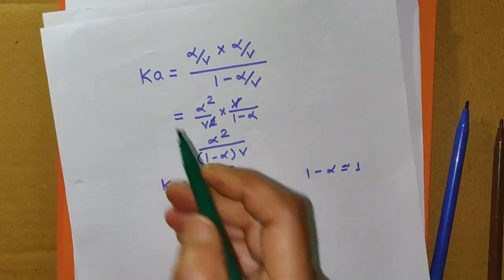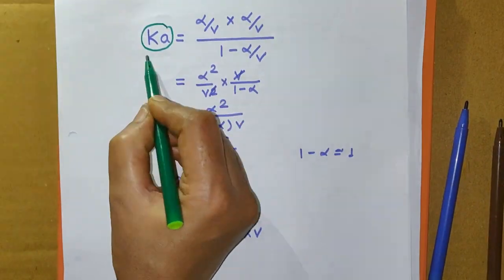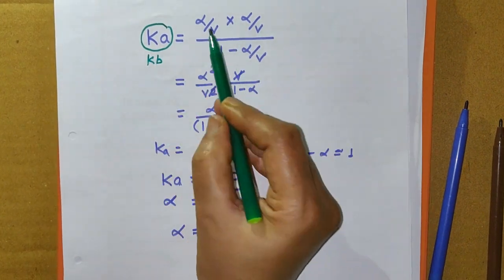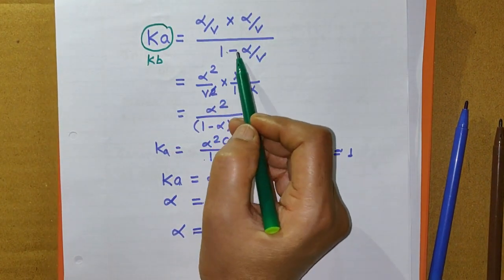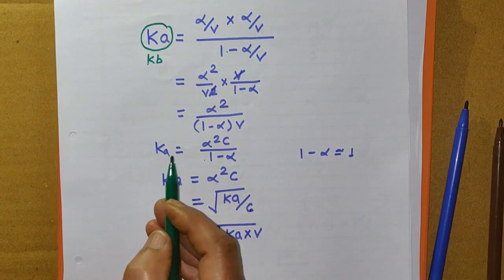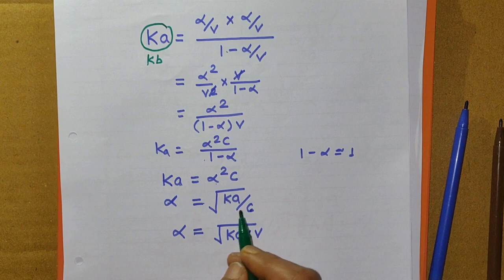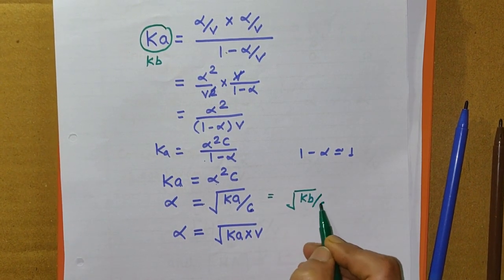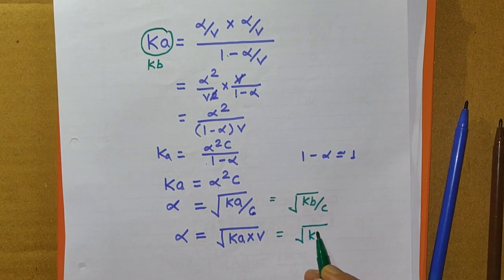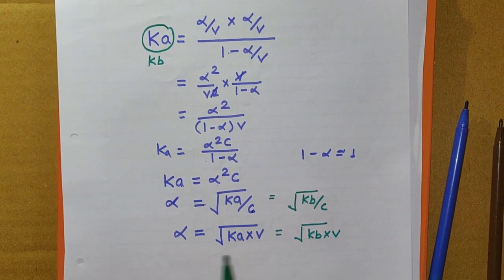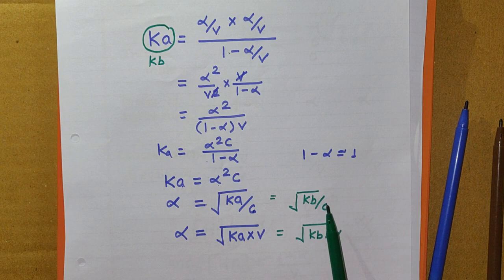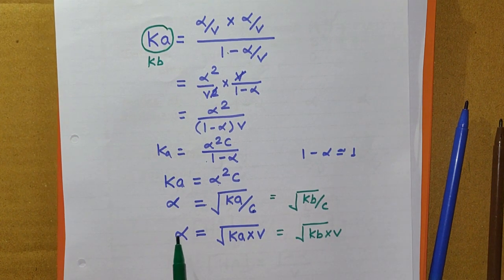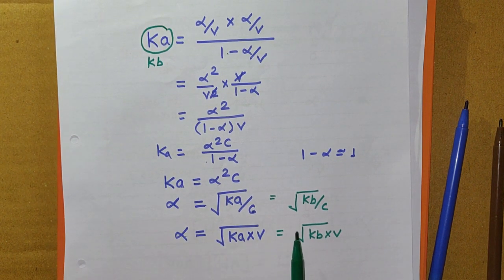The only difference is that Ka is replaced by Kb. Therefore, Kb = (alpha/V × alpha/V) / ((1 − alpha)/V). Following the same steps and simplification, we arrive at alpha = root(Kb/C) or alpha = root(Kb × V). For a weak base also, the degree of ionization is inversely proportional to the square root of concentration at constant temperature, or directly proportional to the square root of volume at constant temperature.